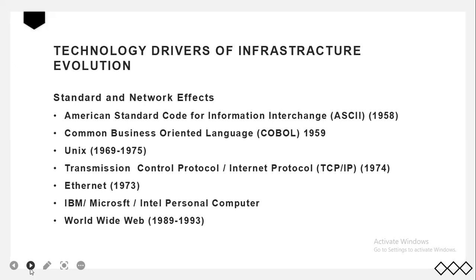Here are some important standards in computing. First, ASCII (American Standard Code for Information Interchange), introduced in 1958, made it possible for computer machines from different manufacturers to exchange data and later served as the universal language linking input and output devices such as keyboards and mice. It was adopted by the American National Standards Institute in 1962. Next, COBOL (Common Business Oriented Language), introduced in 1959, is an easy-to-use software language that greatly expanded programmers' ability to write business-related programs and reduce software costs; it was sponsored by the Department of Defense in 1959.